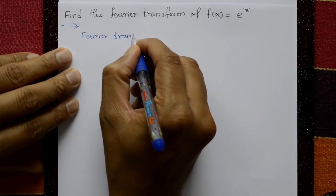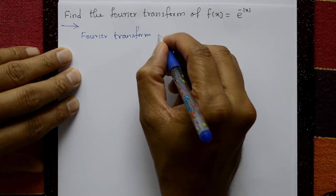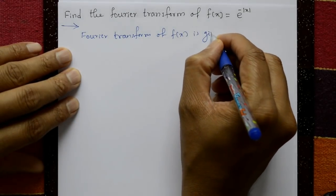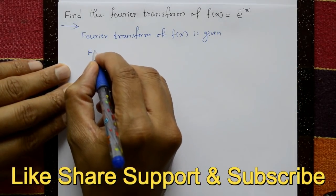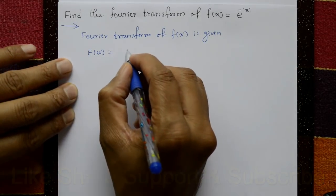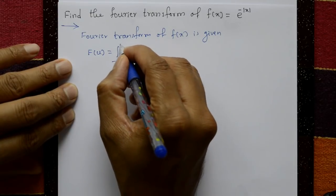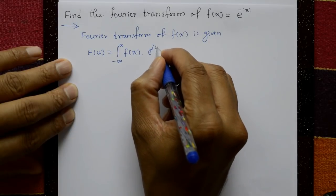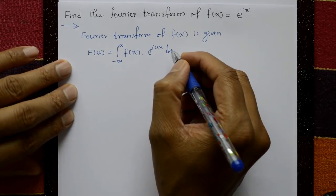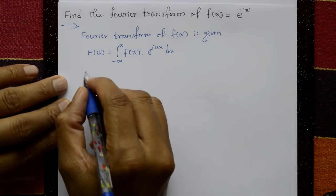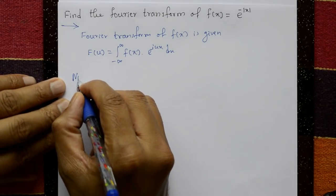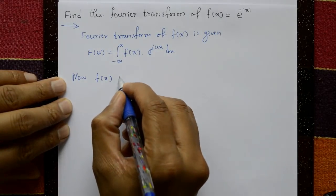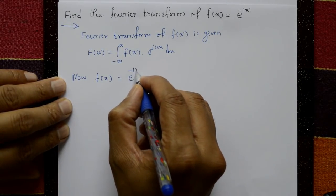The Fourier transform of f(x) is given as: f(u) is equal to integration from minus infinity to plus infinity of f(x) into e to the power i·u·x with respect to x. Now f(x) is given as e to the power minus mod x.